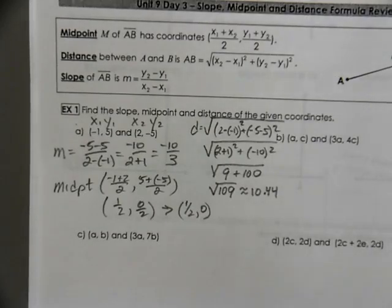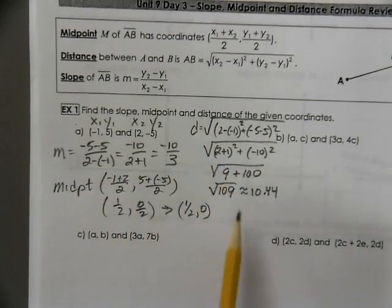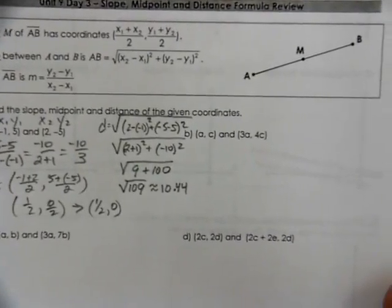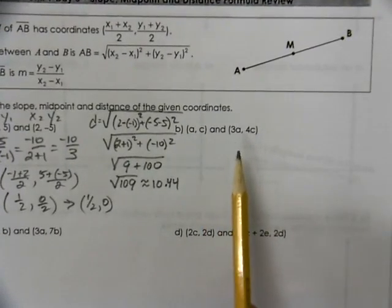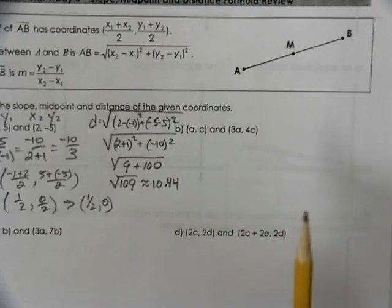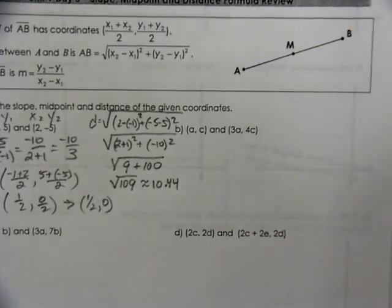So that's when we do the midpoint, the slope, and the distance formula with integers. Now we're going to try working that out using letters. Some would say that the letters could be a little bit easier because in many cases you don't have to simplify.